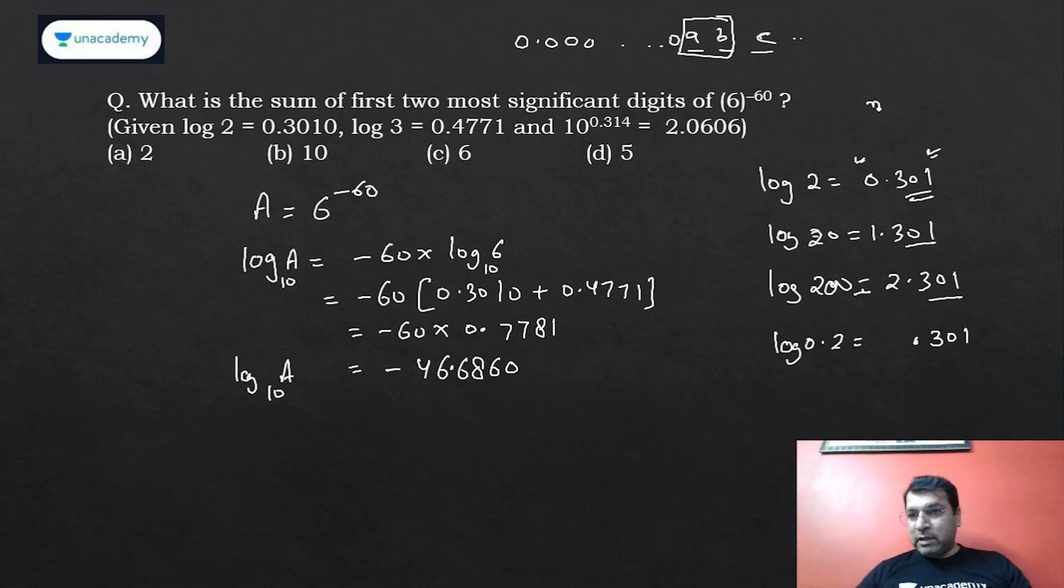But think about this: mantissa is always positive. Only the characteristic can be negative. So we write this as -1 + 0.301, which is called bar 1.301. When solving this type of question, log 0.002 will be 3̄.301, which actually means -3 + 0.301.